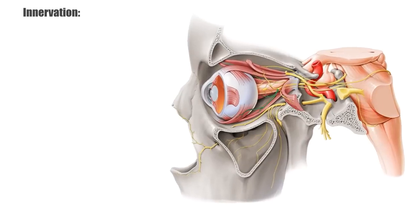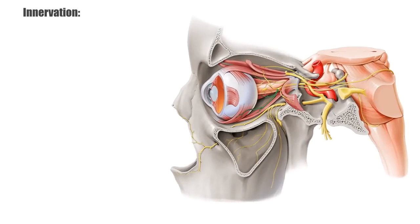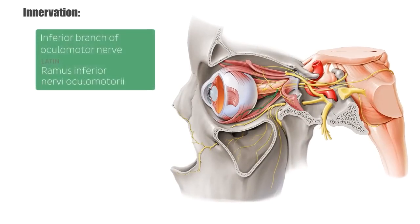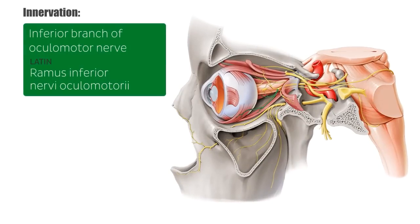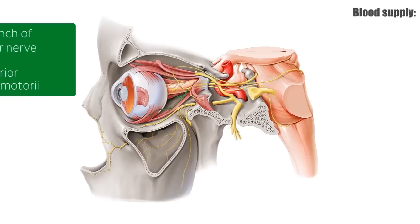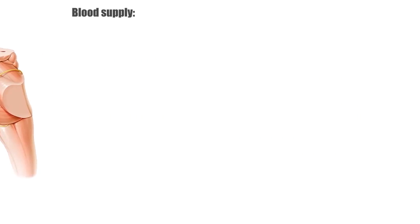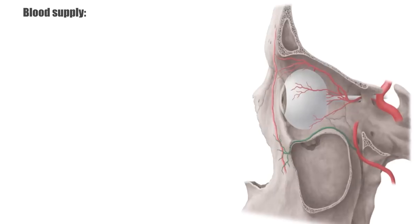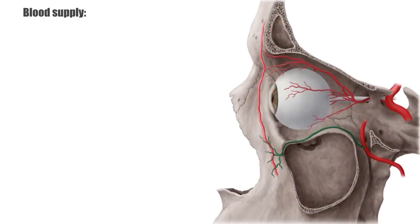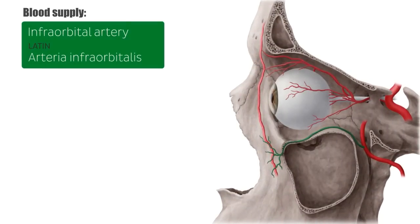The nerve supply to the inferior oblique comes from the inferior branch of the ocular motor nerve, the third cranial nerve. Arterial blood is supplied to the inferior oblique muscle by branches off of the infraorbital artery.